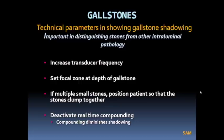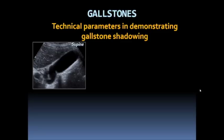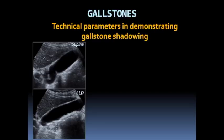Here's a patient scanned in the supine position where the lumen looks clear, or at most you might see a faint straight line indicating stones but no shadowing. The same patient turned into the left lateral decubitus position shows those stones clumped together with clear posterior acoustic shadowing. Without a doubt, we can confirm this patient has multiple small gallstones.